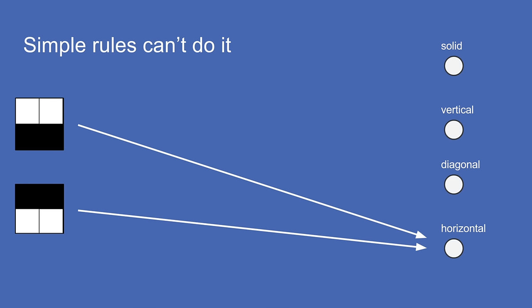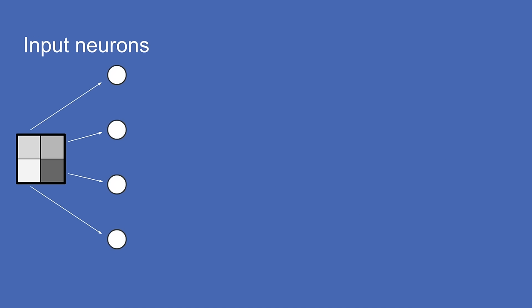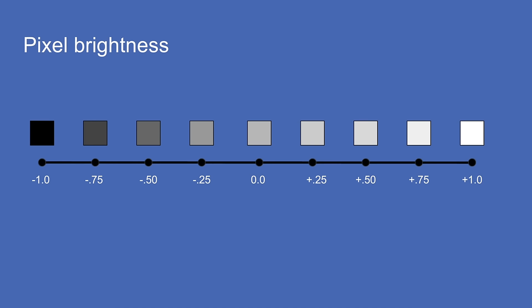To do this with a neural network, you start by taking all of your inputs — in this case, four pixels — and breaking them out into input neurons. You assign a number to each depending on the brightness or darkness of the pixel: plus one is all the way white, minus one is all the way black, and gray is zero, right in the middle.